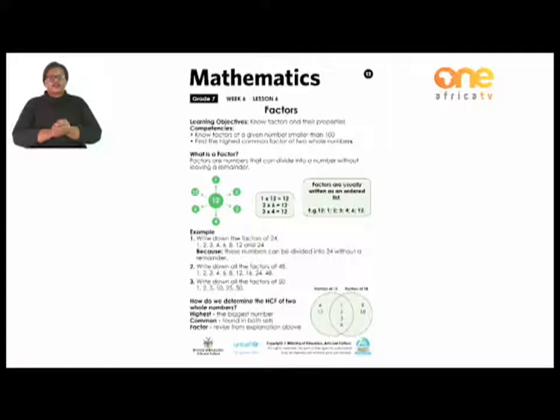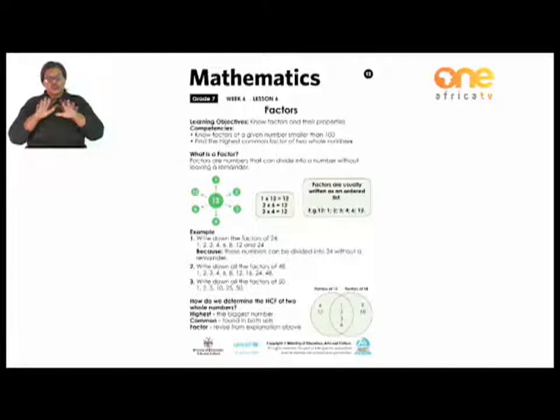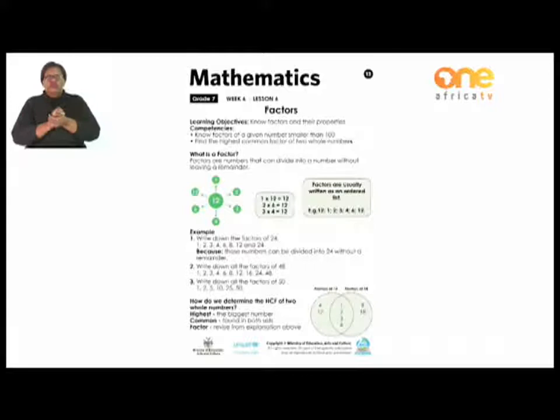Our other competency says we need to determine the highest common factor of two whole numbers. What is the highest common factor? I've explained how to find factors. What is common? Common means numbers that are found in both sets. And highest means the biggest number.